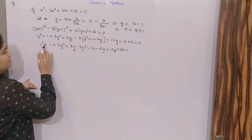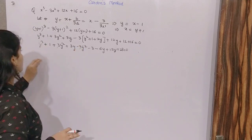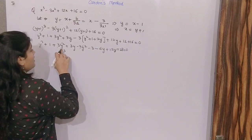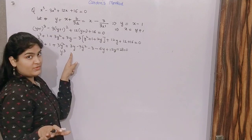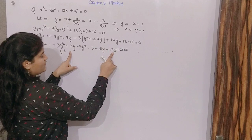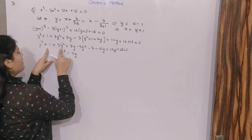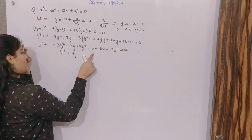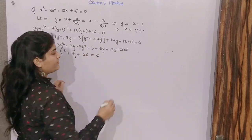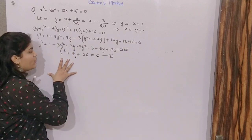Now simplify it. The 3y² terms cancel. Then 3y minus 6y gives minus 3y, plus 12y gives 9y. The constants: 1 minus 3 plus 12 plus 16 gives 26. So the equation becomes y³ plus 9y plus 26 equals 0. You can see there is no y² term — we have removed it.